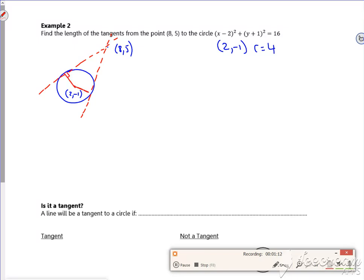And you can draw a nice right angle in there. Now I know that the length of the radius is 4. I know that. Now I'm going to be a bit sneaky. If I find the length from the center to the point, I've got two sides of my triangle.